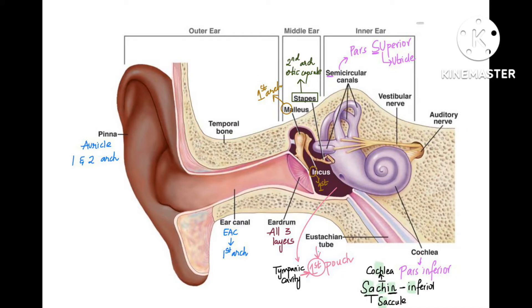Coming to the middle ear, after the tympanic membrane you have the middle ear. In middle layer you have ear ossicles: malleus, incus, and stapes. Malleus and incus are derived from first arch, whereas stapes is derived from second arch and otic capsule. Malleus and incus from the first arch, stapes is from second arch.